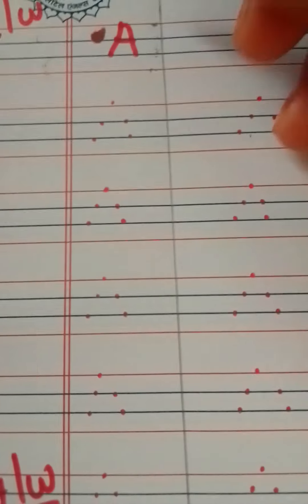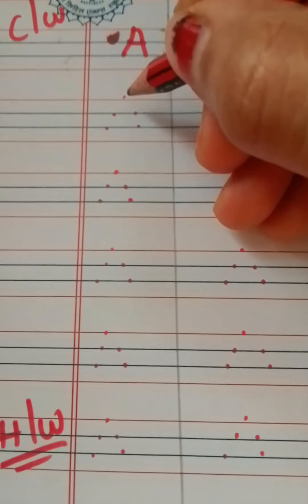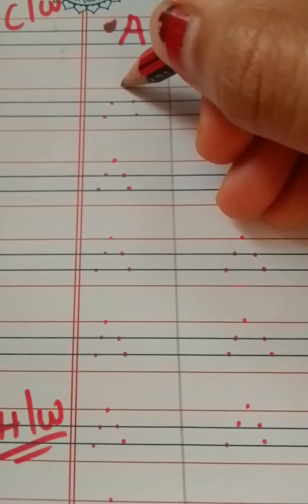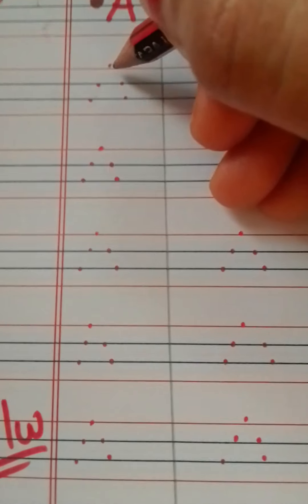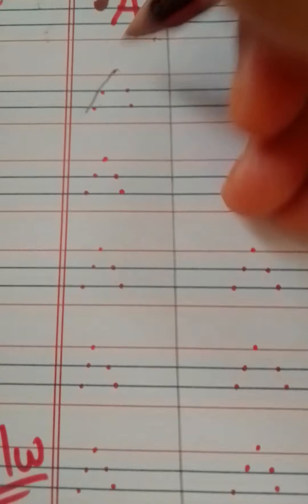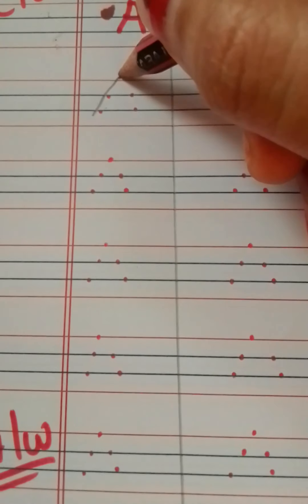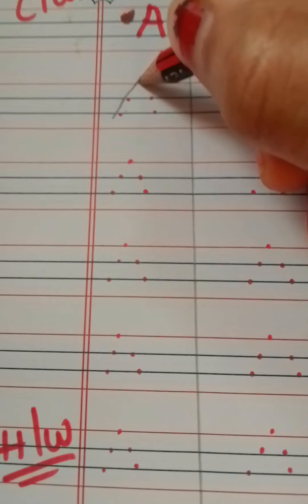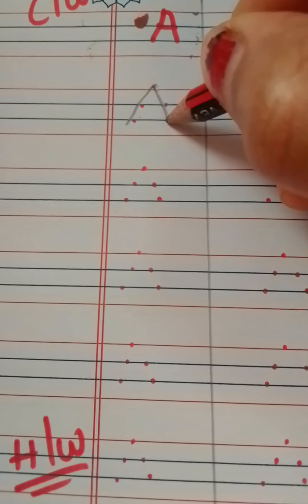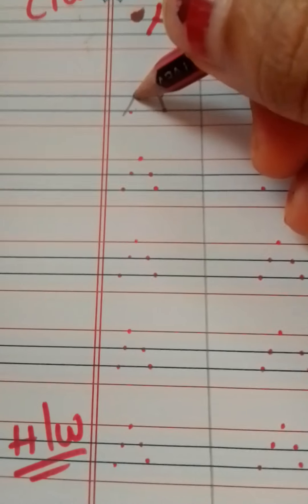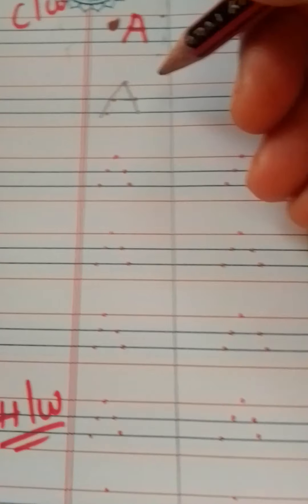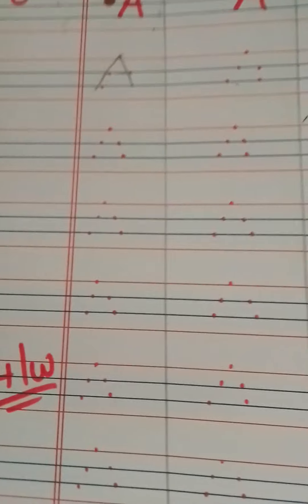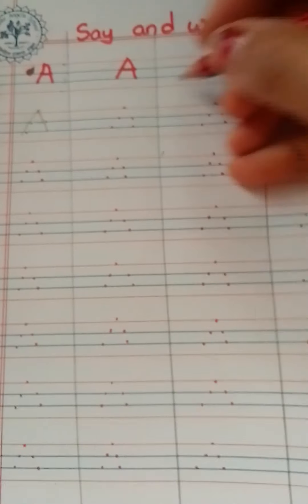Now I will show you A first. From skyline to second middle line — left slanting line. And from the same point, top line to second middle line — one more slanting line. And a sleeping line on first middle line. This is A.